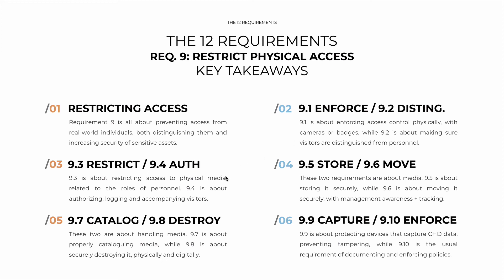9.3 is about actually restricting access to physical media and specifically limiting that access as much as possible related to the roles of different personnel. While 9.4 is about authorizing, logging, and accompanying visitors to the premises — not allowing them to be alone or to have a chance to attack your premises.